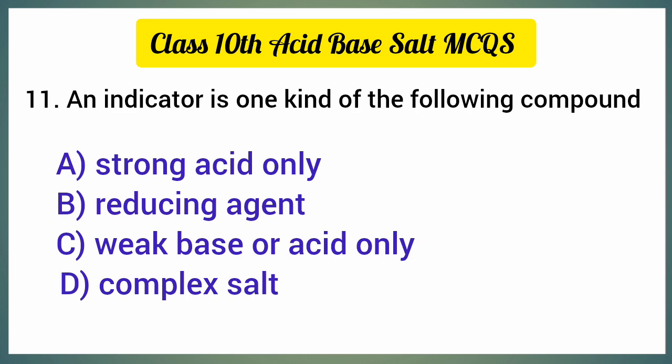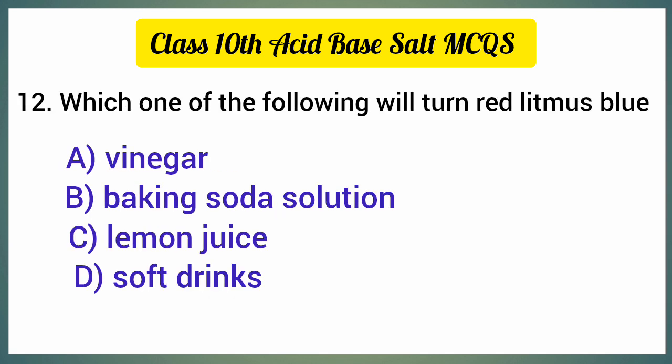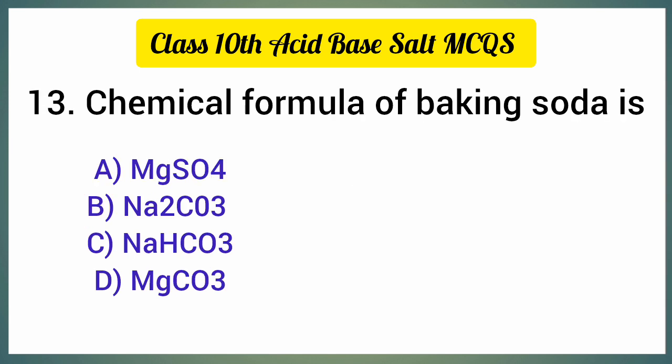An indicator is one kind of the following compound — the correct option is option C, weak base or acid only. Which one of the following will turn red litmus blue? The correct option is option B, baking soda solution.